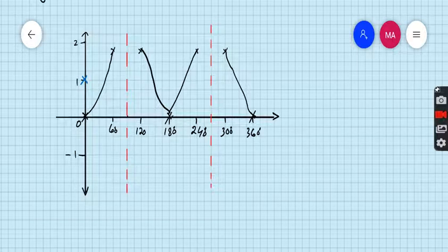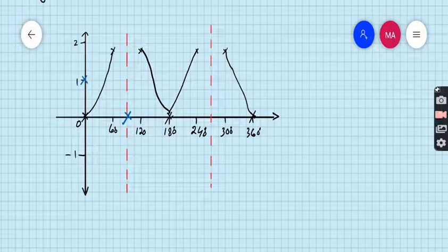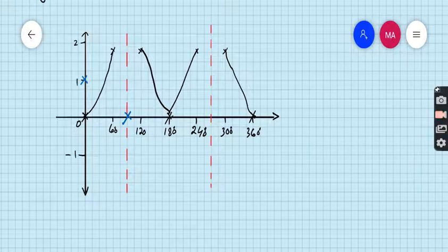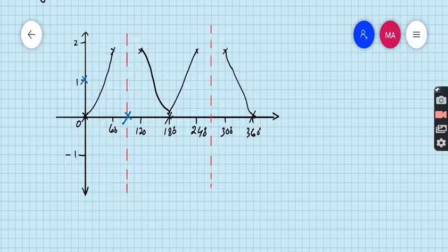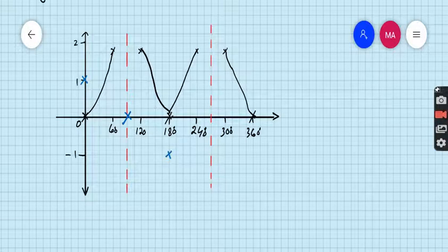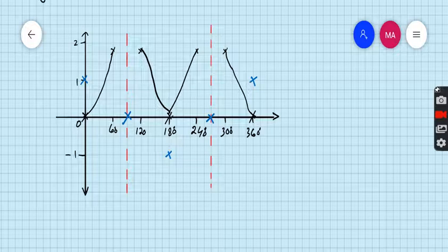For 90 degrees the value is 0, so this is the second point. For 180 degrees the value is minus 1. For 270 degrees the value is 0, and for 360 degrees the value is 1.